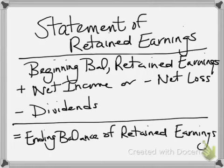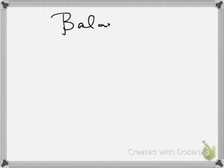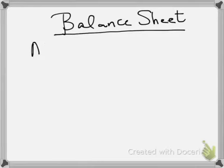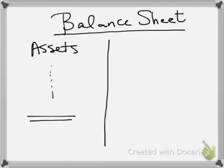The first statement we prepare is the income statement, the second is the statement of retained earnings, and third we prepare the balance sheet. The balance sheet can be structured vertically or horizontally. I like to think of it horizontally, from side to side, because then we can reflect on how it relates back to the accounting equation where assets equal liabilities plus owner's equity.